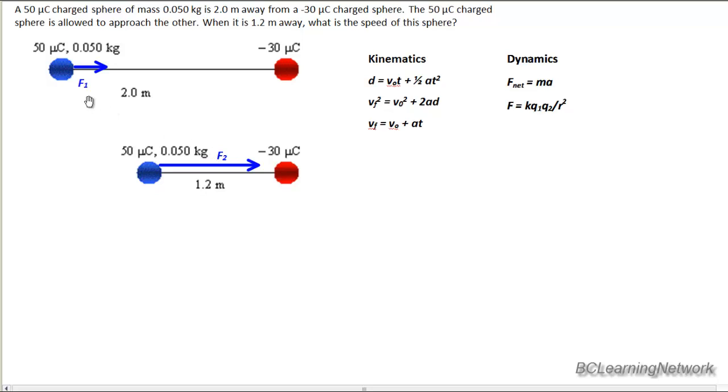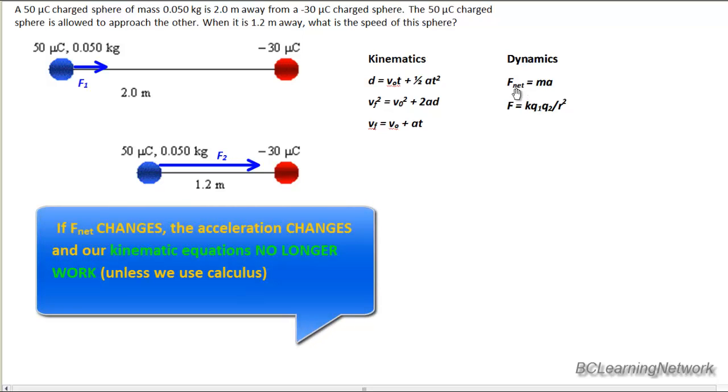So F2 is clearly bigger than F1, which means my net force does not have a consistent value. Originally, we just assumed my net force was whatever the value of F1 was, but obviously, the value is growing. So if the force is changing, that means my acceleration is changing, which means my kinematics equations,